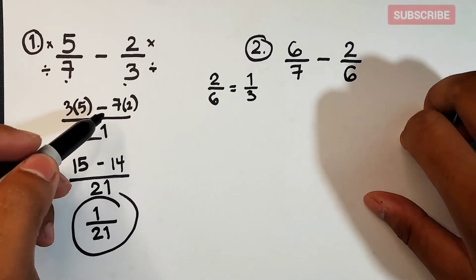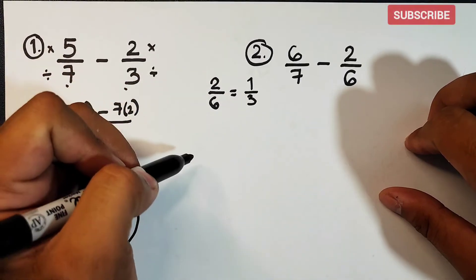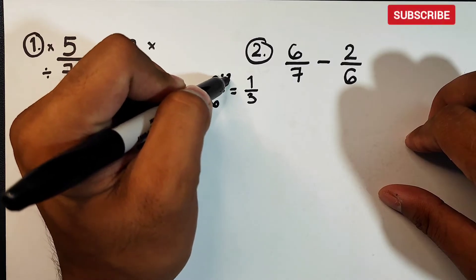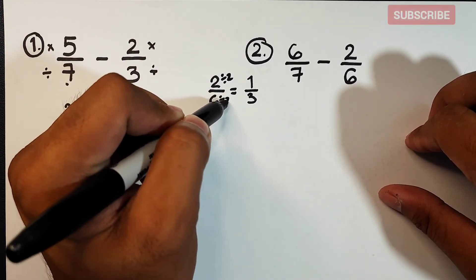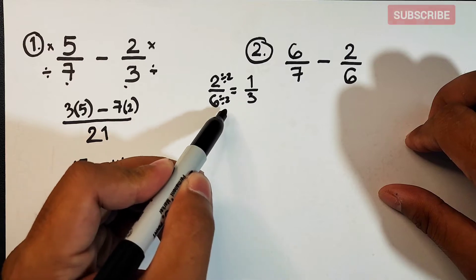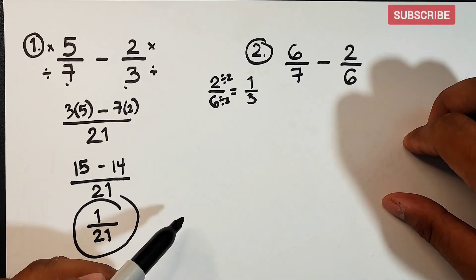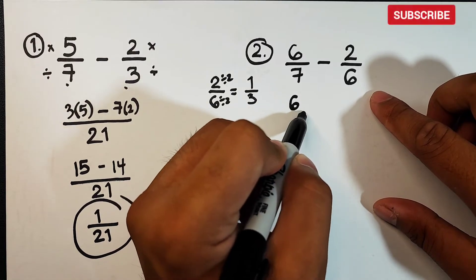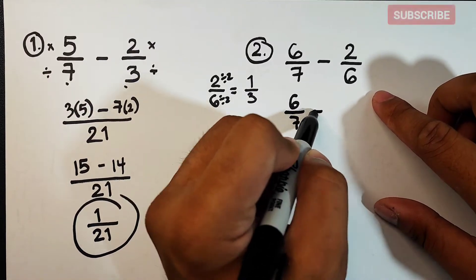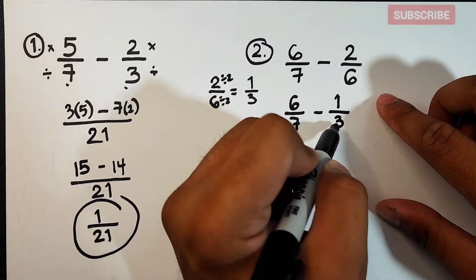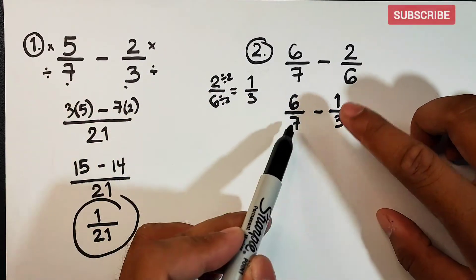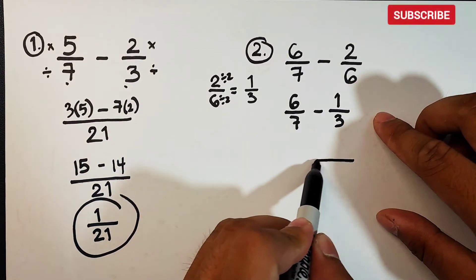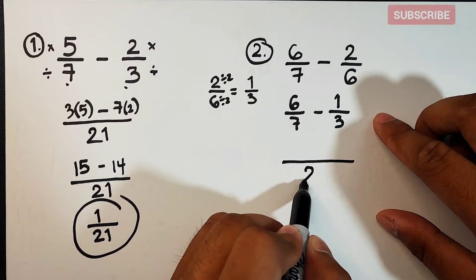How did I get 1 over 3? I found that the greatest common factor is 2. So I divide the numerator by 2: 2 divided by 2 is 1. And 6 divided by 2 is 3. So this becomes 1 over 3. We can rewrite this fraction as 6 over 7 minus 1 over 3, and as you can see, the denominators are the same as in the previous example.